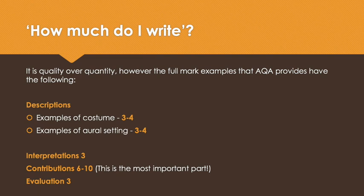As a teacher, we often hear: how much should I write for this question? The answer is always quality over quantity. However, when looking at the full mark examples that AQA have provided us with, they include around six to eight descriptions — three or four for costume and three or four for aural setting — three interpretations, six to ten contributions, and three evaluations.